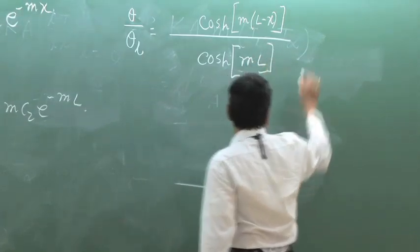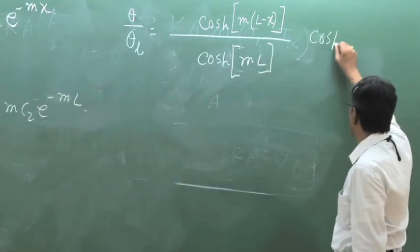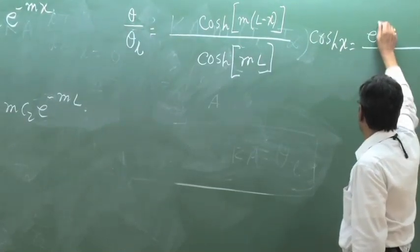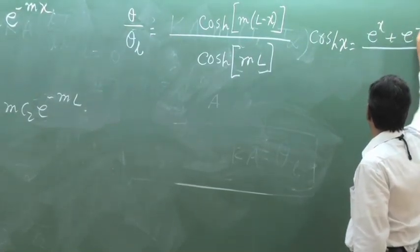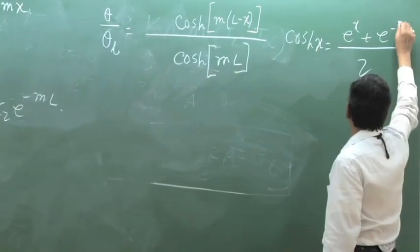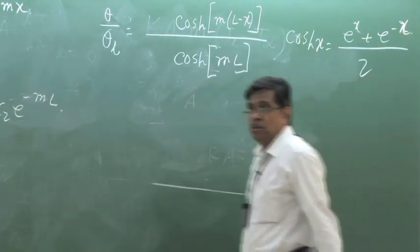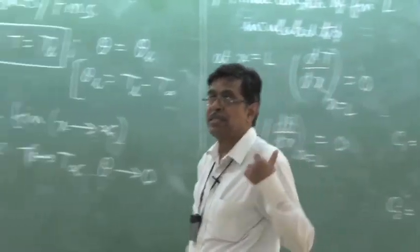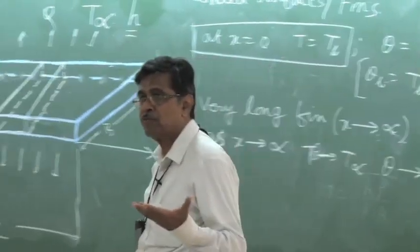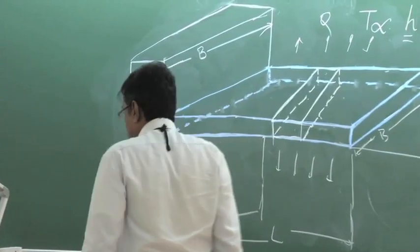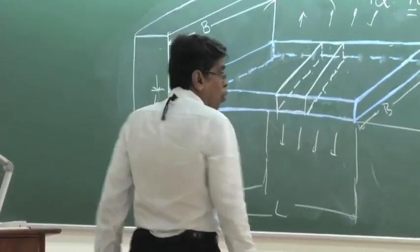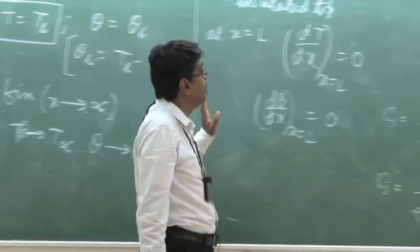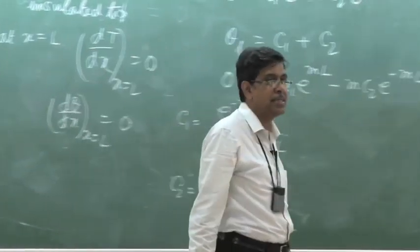You know the hyperbolic function: cosh(x) equals (e^x plus e^(-x)) divided by 2. So this is the final expression. It becomes a routine job — the only important thing is to write the boundary condition correctly, then things are done.